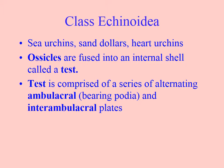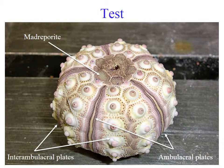The unifying thing for this class is that the ossicles — the little bony bits that act as echinoderm skeleton — are fused together. They don't have that muscle connective tissue spacer talked about in other classes of echinoderms. They're fused together into the classic urchin shell, which is called a test, and that has a series of alternating ambulacral areas and interambulacral areas.